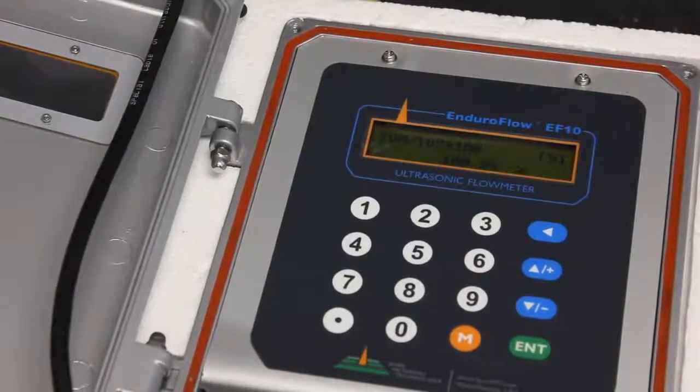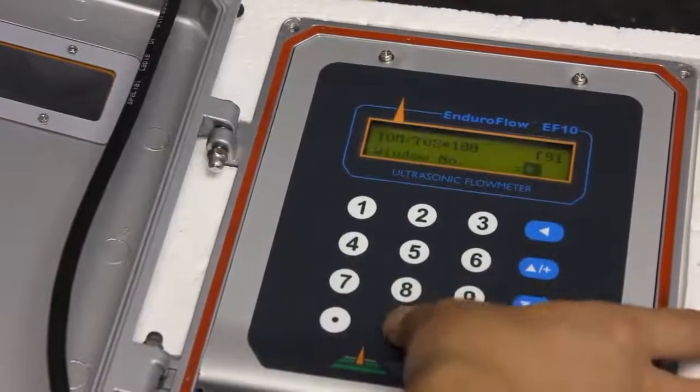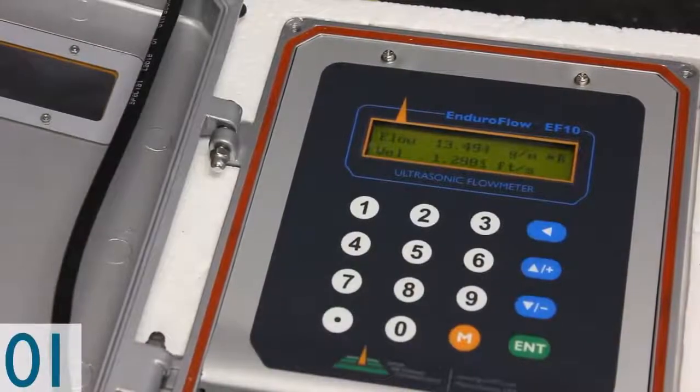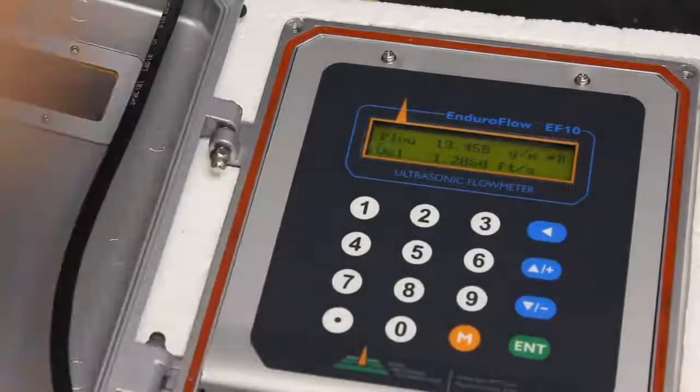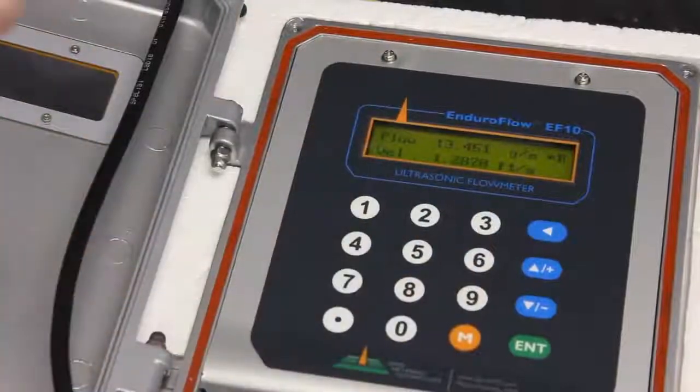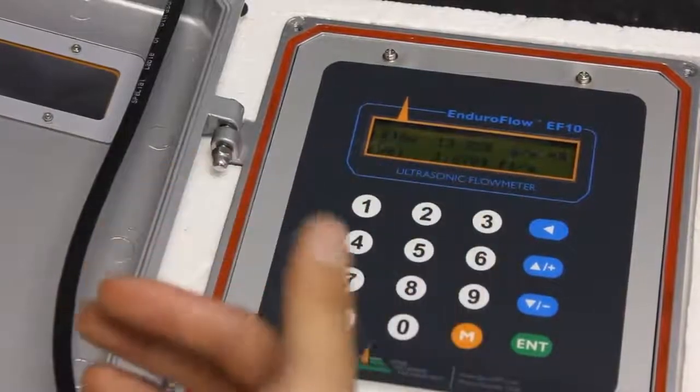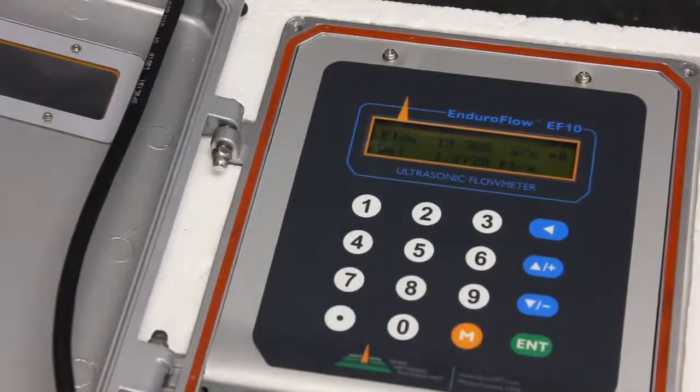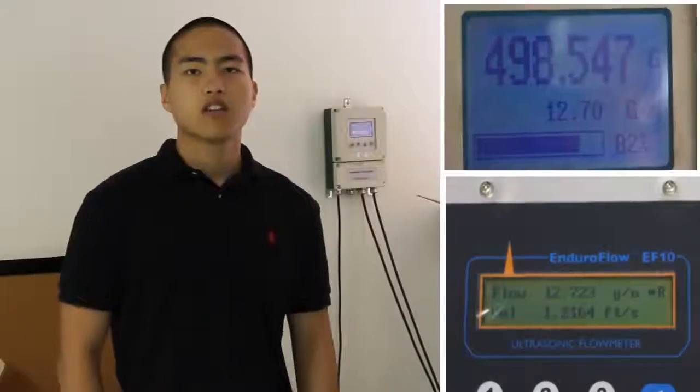Now that we have the value as close to 100 as possible, you can go ahead and check your flow. Menu 01. And make sure that the flow is not negative. The flow should be positive if you have the upstream pointing in the direction of the flow and the downstream pointing against the direction of the flow. If the flow is negative, that just means you need to swap the transducers.